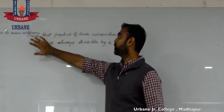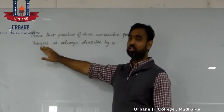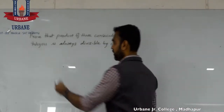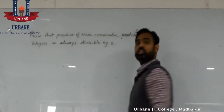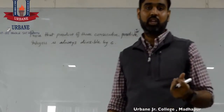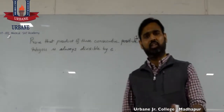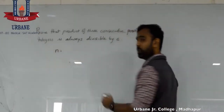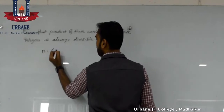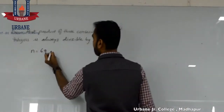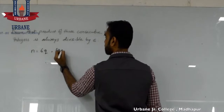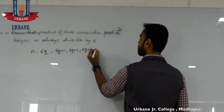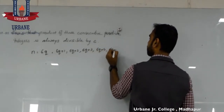Let's solve this question: prove that the product of three consecutive positive integers is always divisible by 6. Now let's use the Euclidean division lemma, which says any number divided by 6 leaves a remainder as 0, 1, 2, 3, 4 or 5. So this is expressed as: a number leaving remainder 0 is expressed as 6q, remainder 1 as 6q plus 1, then 6q plus 2, 6q plus 3, 6q plus 4, and 6q plus 5.